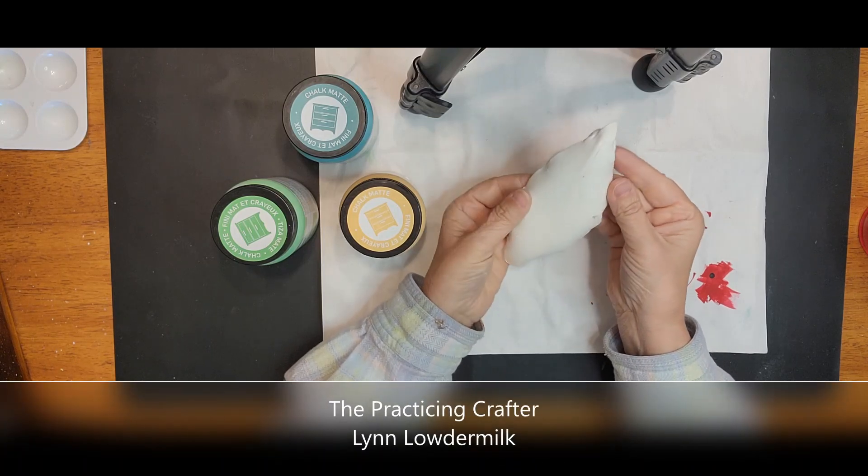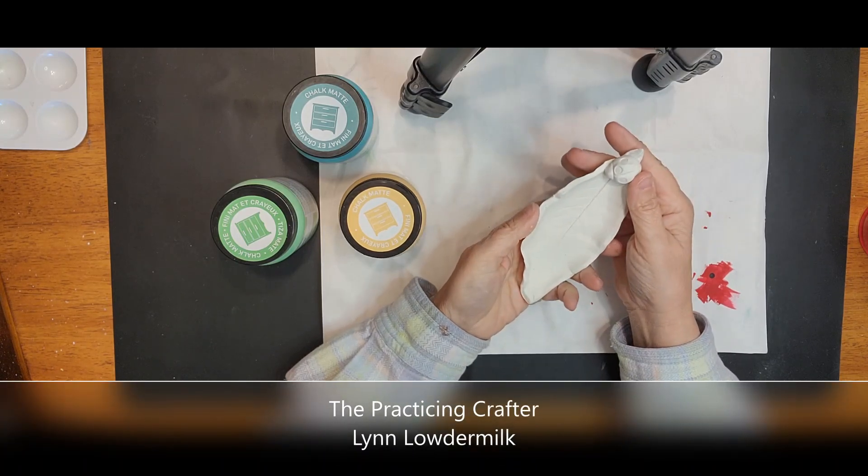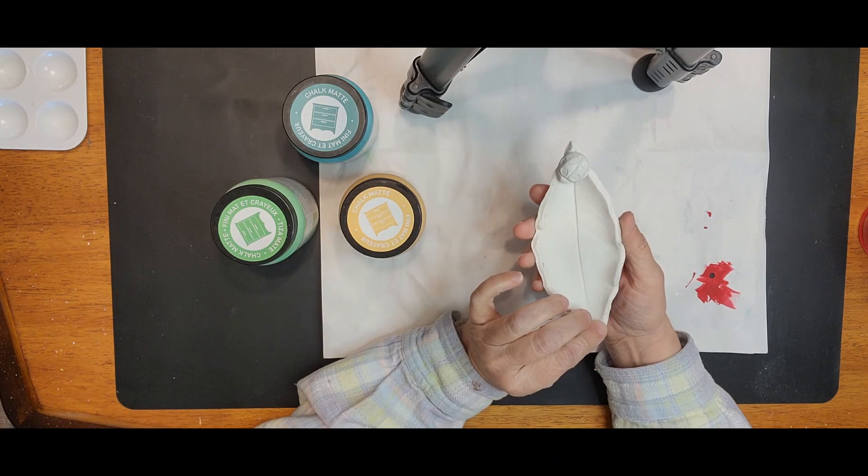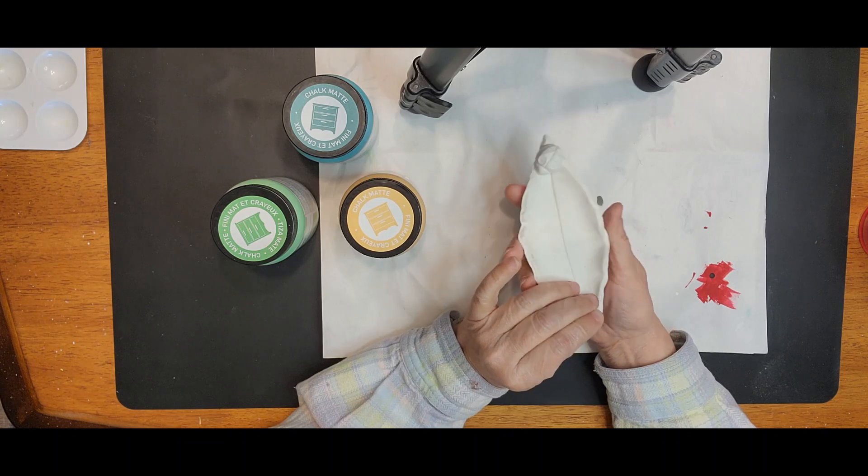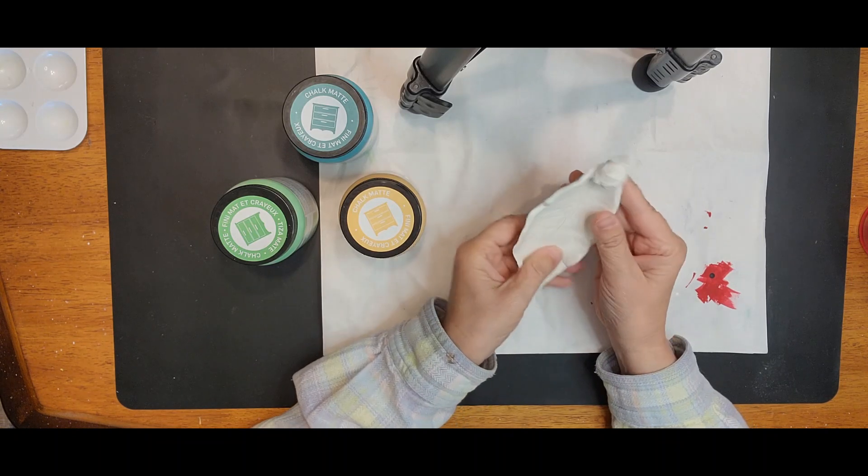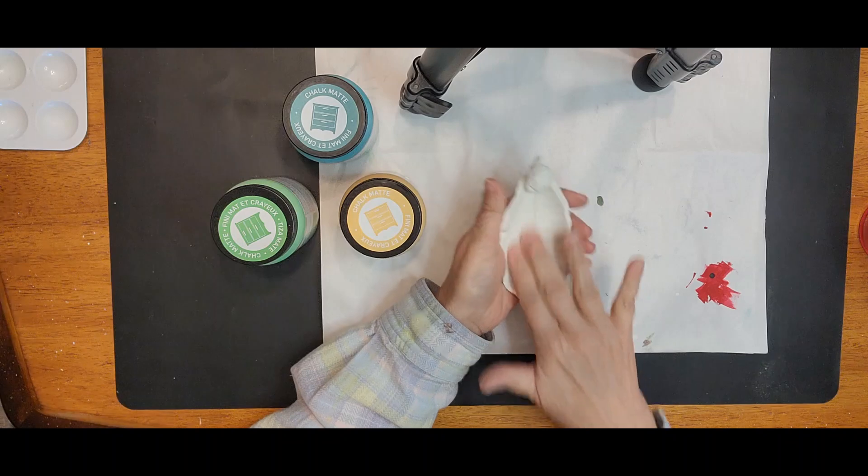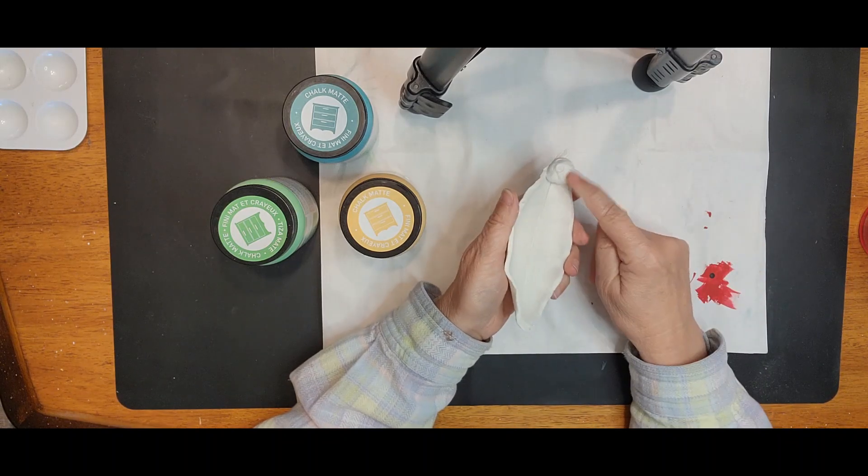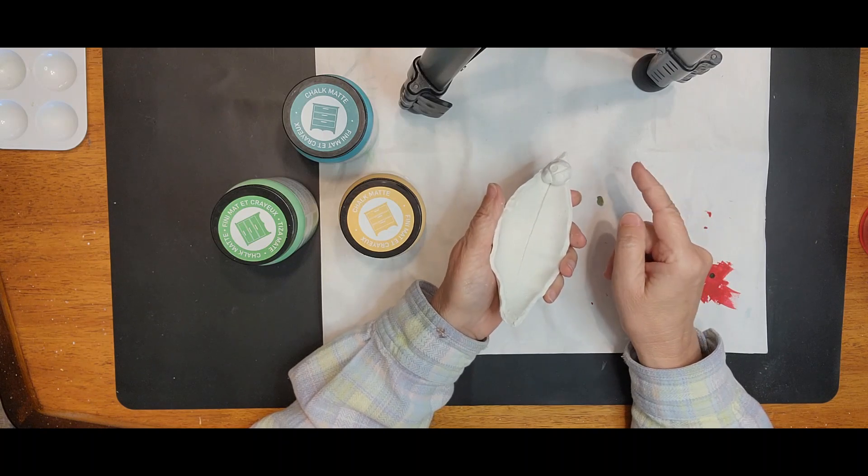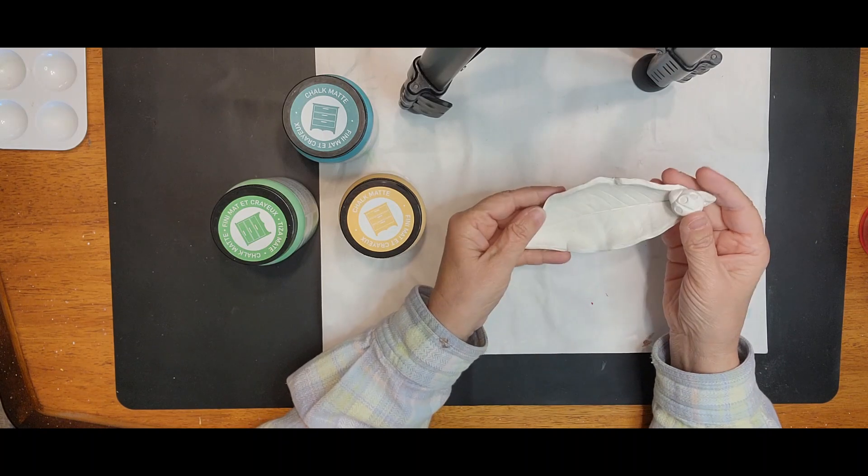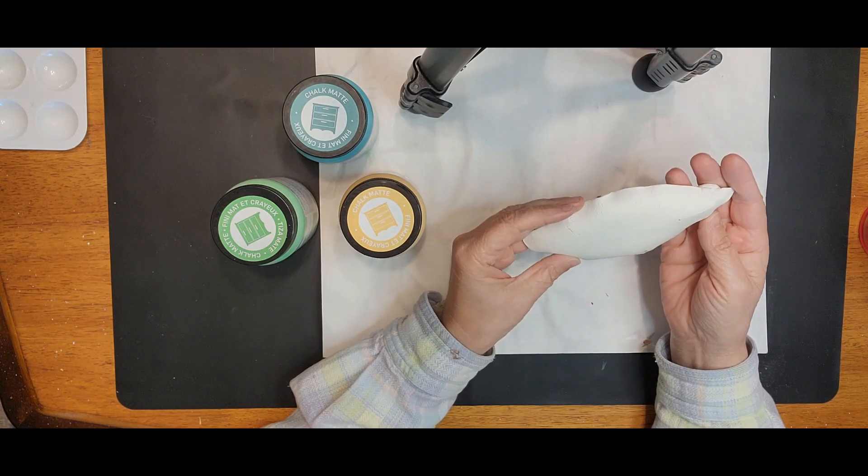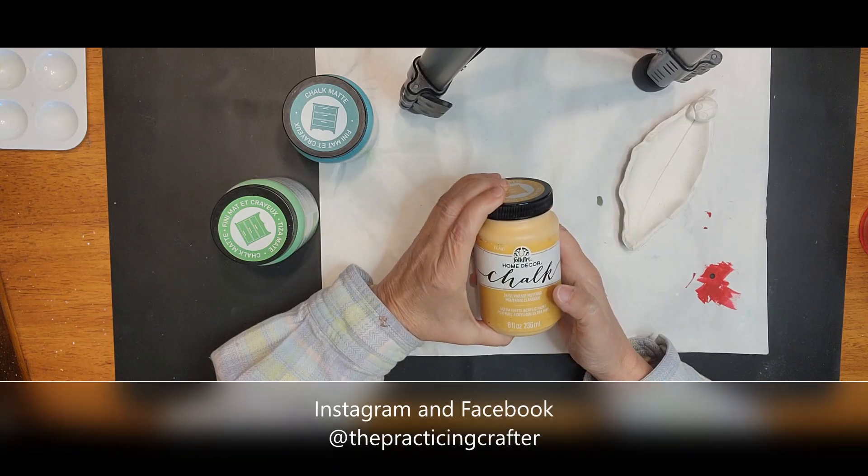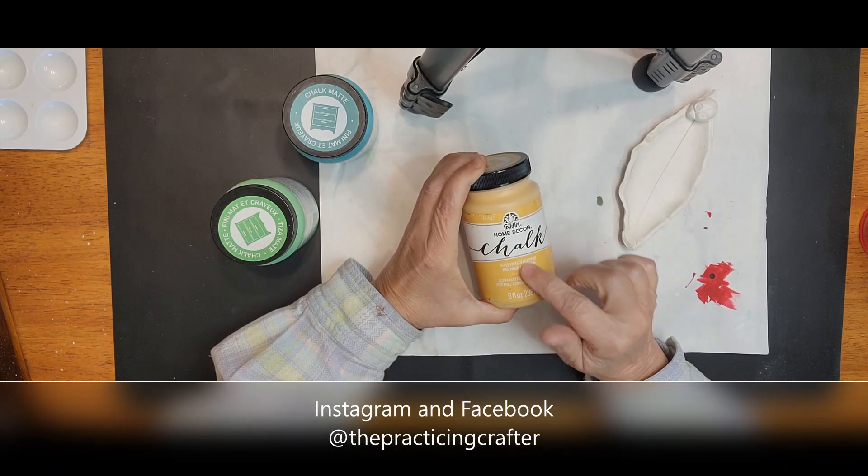Today we are going to paint these leaves that I created from some Crayola air-dry clay, to be used as a little trinket place. They have one of our favorite garden insects on the end, and we are going to do a layered effect using our Folk Art Home Decor chalk paint.